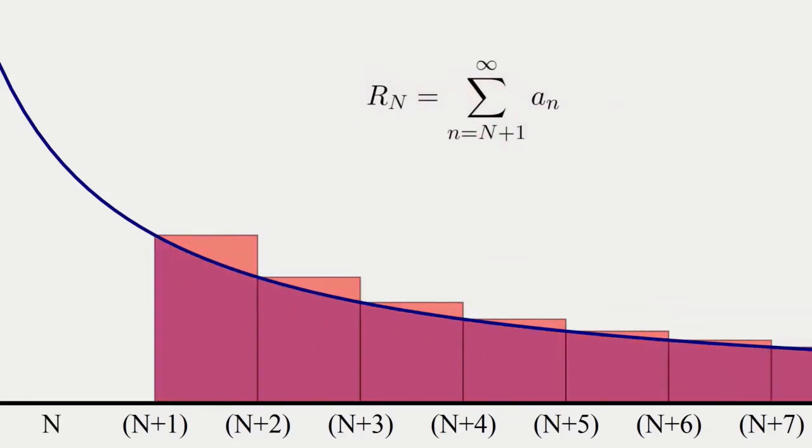If I now shade in the area that corresponds to the integral from n plus 1 to infinity of the function f, you can see pretty clearly that it underestimates the area covered by the rectangles, thus giving rise to the lower bound appearing in the estimate.